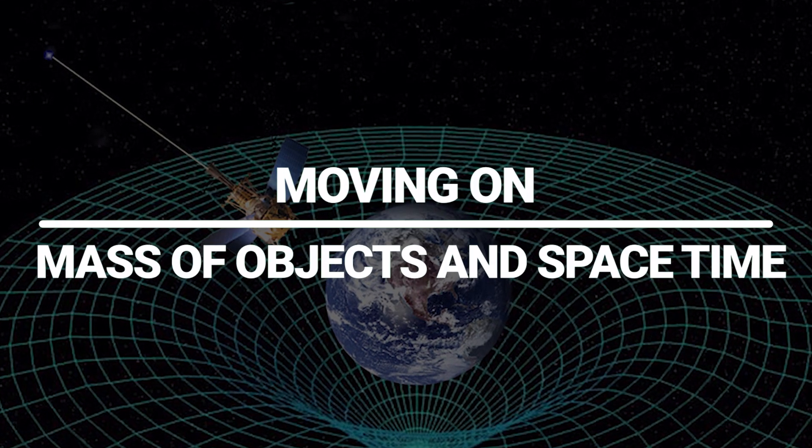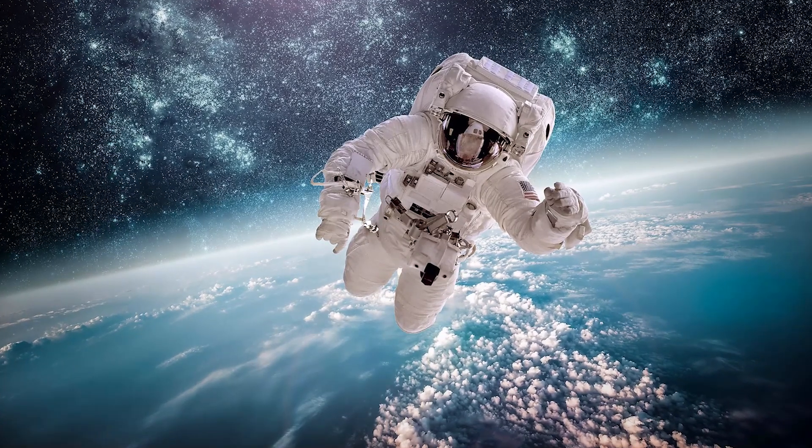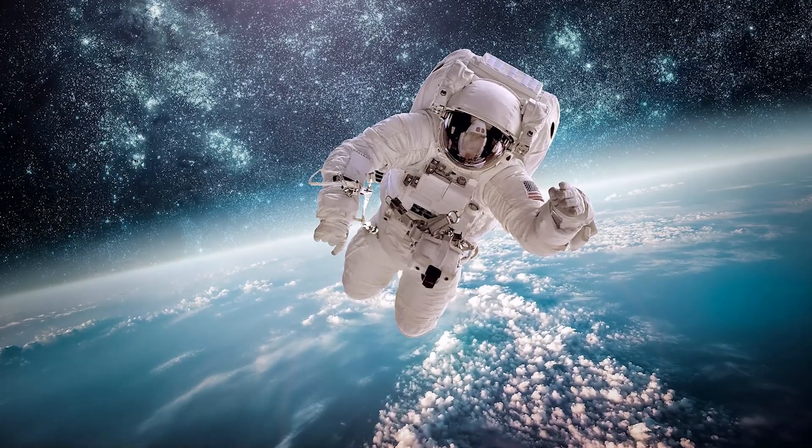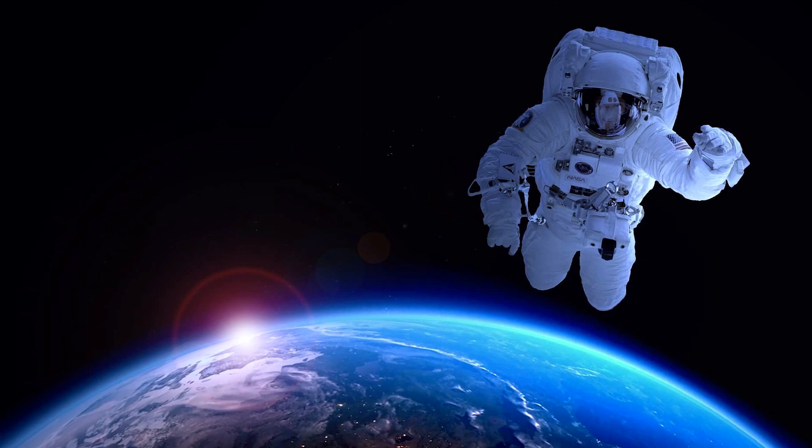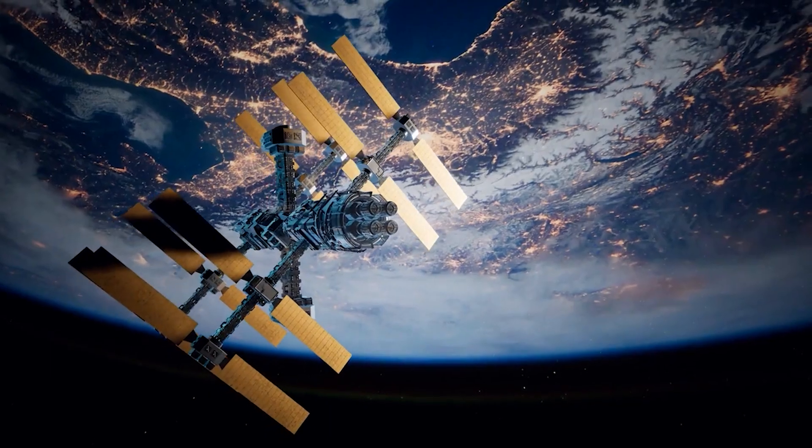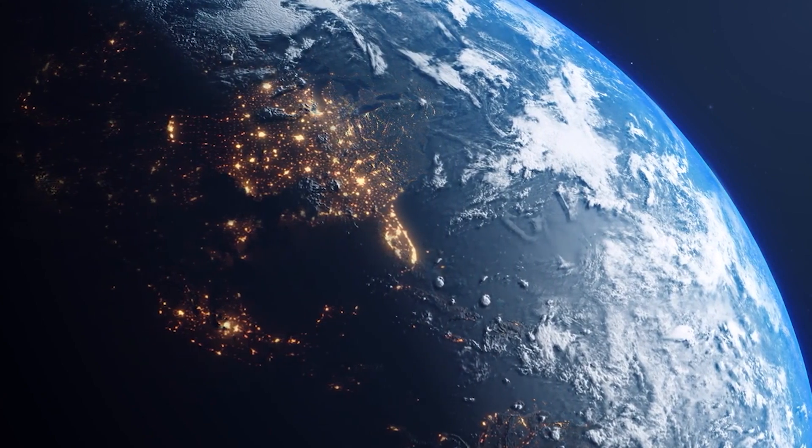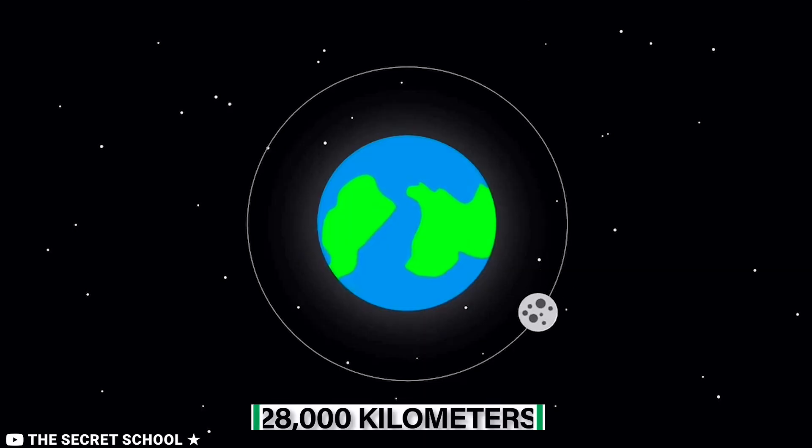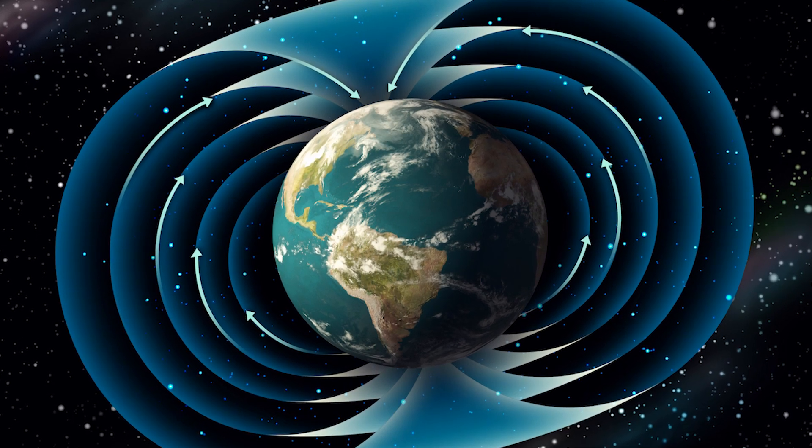Moving on, mass of objects and space-time. If all objects fall in the same way, regardless of mass, then a space traveler free-floating in space, distant from any gravitational source, and a space traveler free-falling in the gravitational field of a big body would have the same experience. In reality, the International Space Station and all of the satellites in orbit around us are constantly descending toward Earth at a rate of almost 28,000 kilometers per hour due to the strong gravitational pull of the Earth's poles.